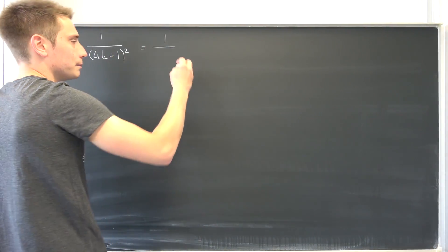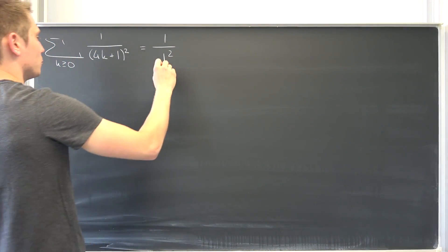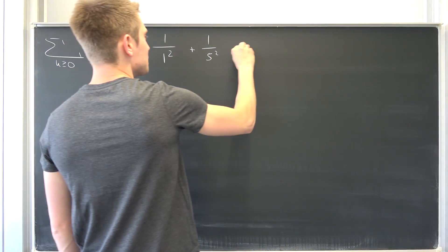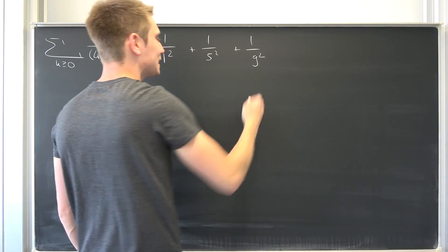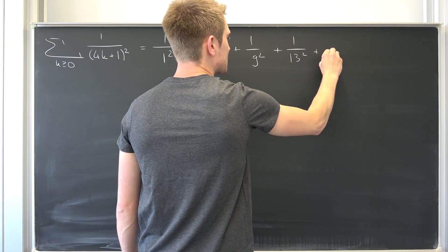So what do we have? We are having Hakuromo chalk. This is what we have definitely: 1 over 1 squared plus 1 over 5 squared plus 1 over 9 squared plus 1 over 13 squared plus dot dot.